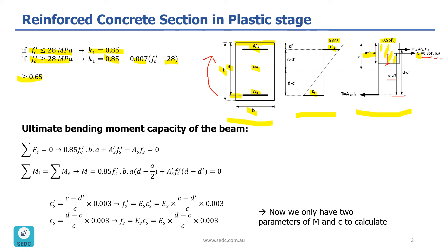Also, you can see C prime s, which is the force in the steel reinforcement in compression, which is equal to A prime s times f prime s. The distance from C prime s to the tensile reinforcement is d minus d prime. And d prime is our cover for the steel reinforcement in compression. T is the force in steel reinforcement in tension, which is equal to A_s times f_s. So now, how can we calculate the ultimate bending moment capacity of the beam in ultimate strength design?